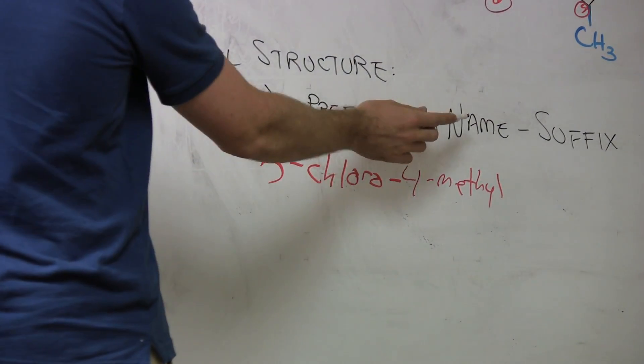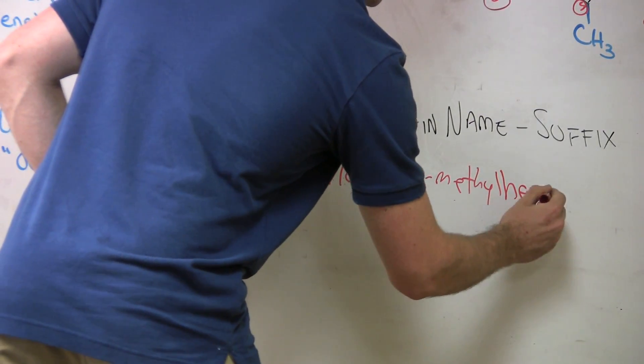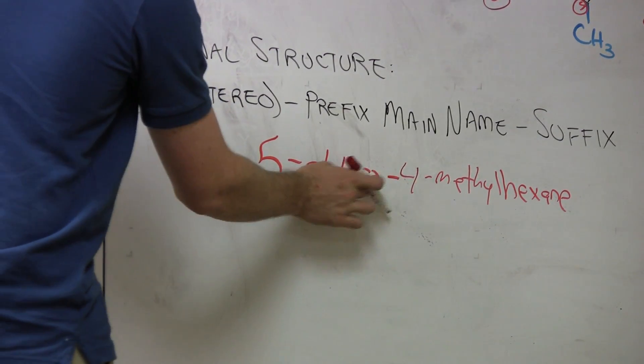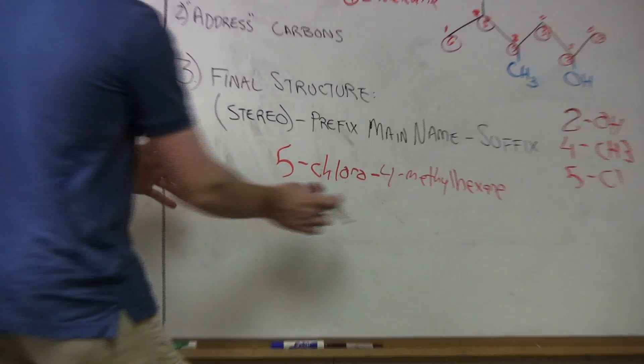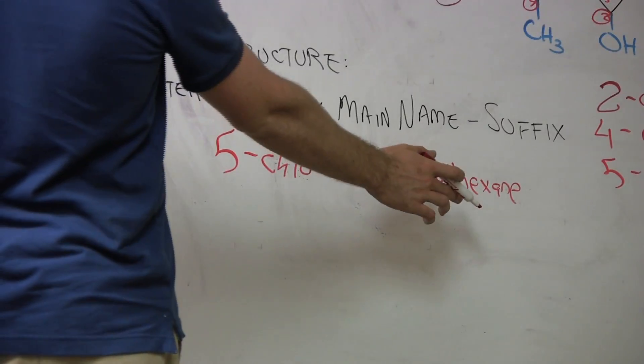Now we go right into our main name, which is hexane. Notice that we have hyphens between letters and numbers—that's important to note. Notice how I don't have it here because it's between two letters.